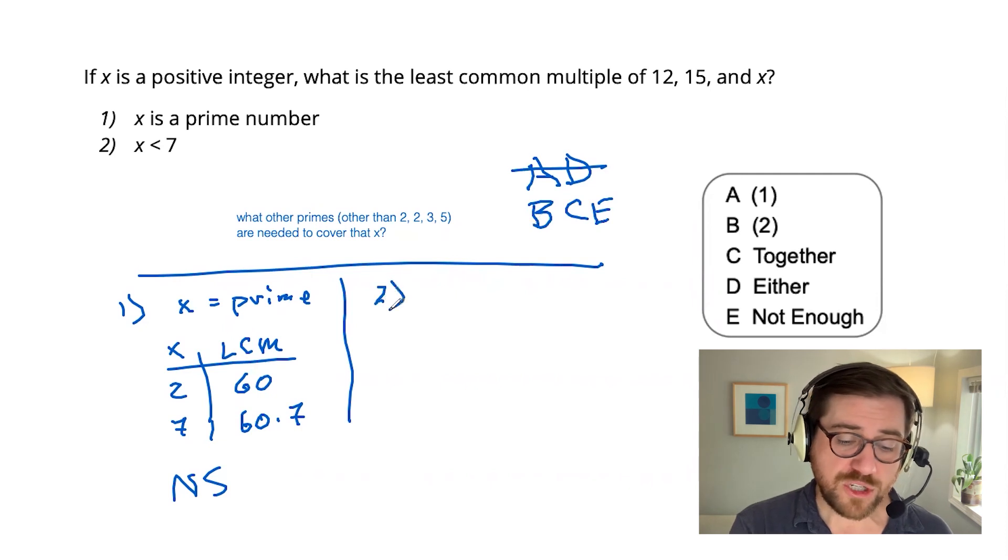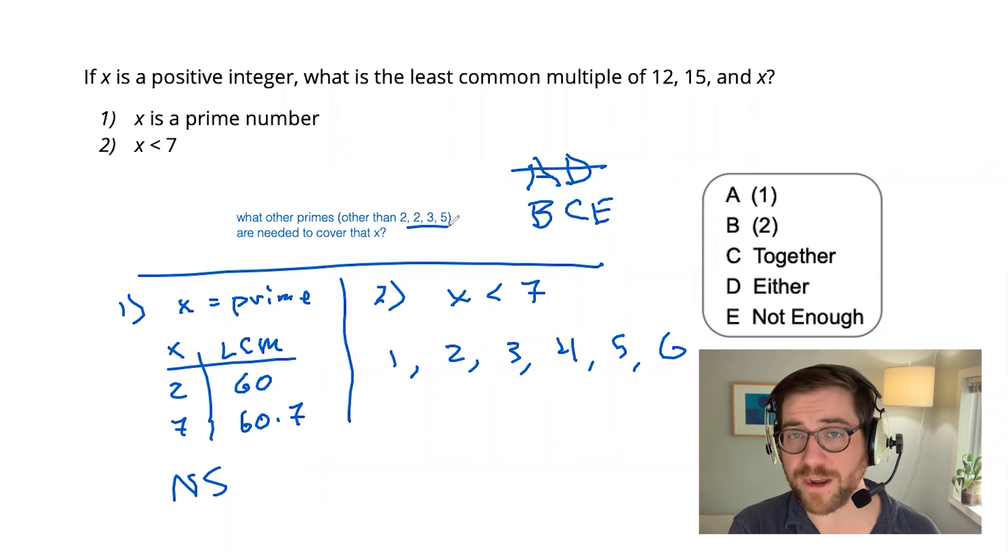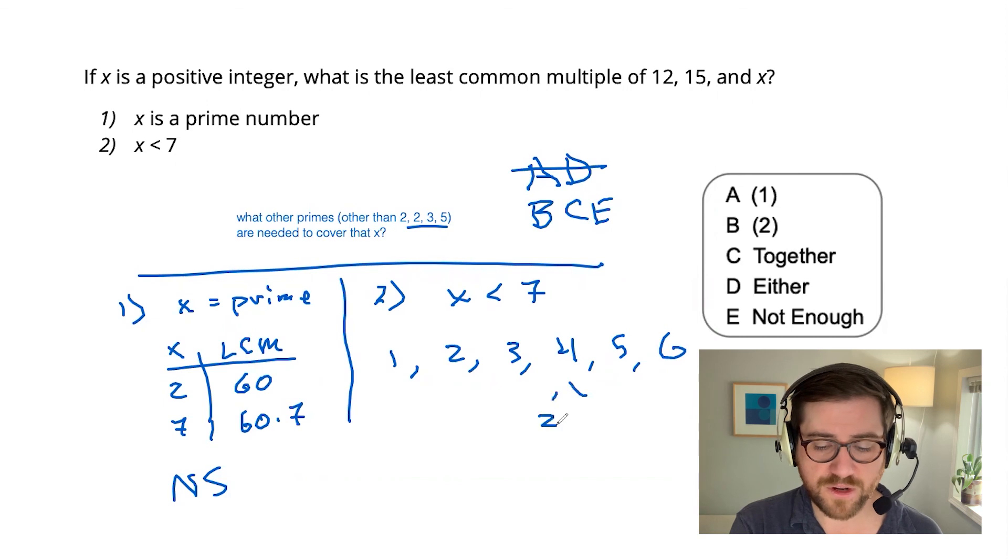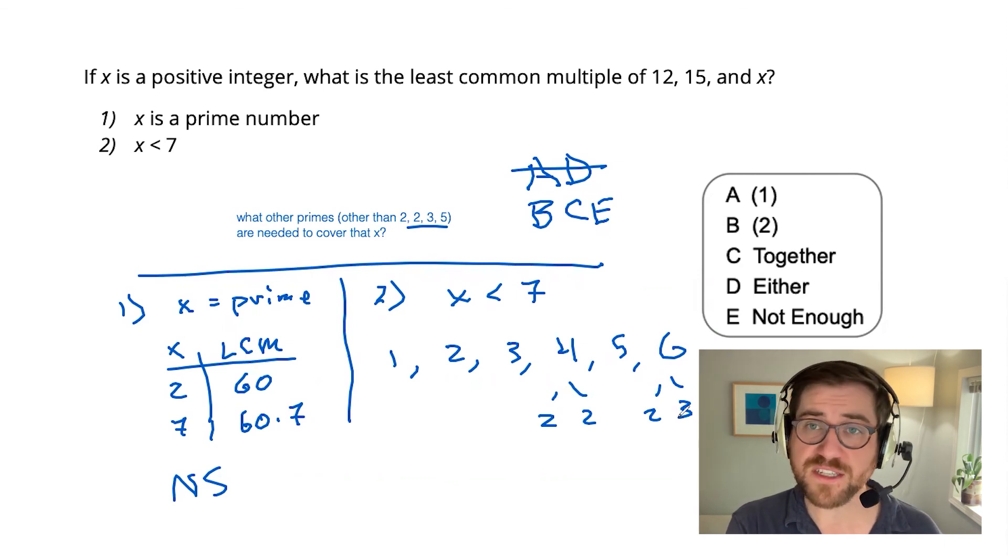Now I'm going to go to 2 and evaluate this on its own terms. x is less than 7. Well, now that's not going to provide too many possibilities. Let's just lay them out here: 1, 2, 3, 4, 5, or 6. Are any of these going to provide something new that I don't already have on the list? 2, I got that covered. 3, I got that covered. 5, I got that covered. 4 is 2 times 2. I got that covered. 6 is a 2 and a 3. I've got that covered. So no. The LCM here is going to be 60. And what really matters is that this data was sufficient to answer the question. So final answer here is B.